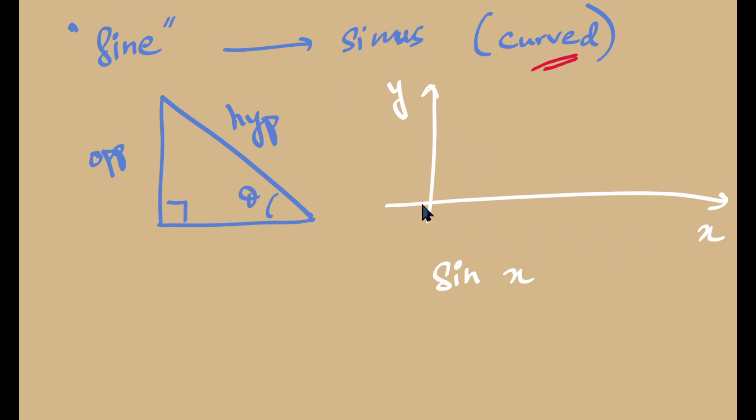So what I mean by that is, say that X is equal to 0. So this is the point where X is equal to 0. I'll plot the corresponding sine 0 value on the Y axis. So sine 0 is 0. We know that. So I'll plot it here.